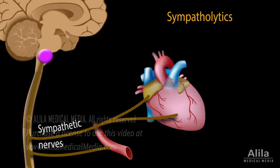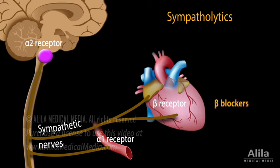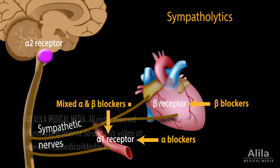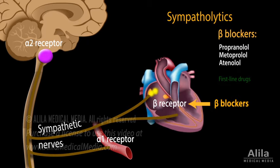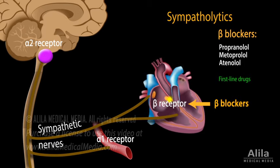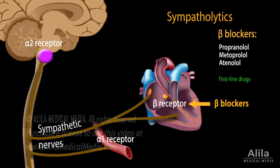Sympathetic inhibitors, or sympatholytics, act on adrenergic receptors to block sympathetic activity. There are beta blockers, alpha blockers, mixed alpha and beta blockers, and central sympatholytics. Beta blockers are typical first-line treatment for hypertension. They reduce heart rate and cardiac contractility, and thus decrease cardiac output.